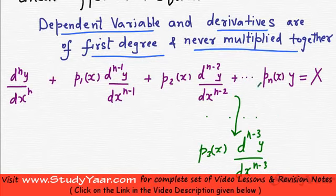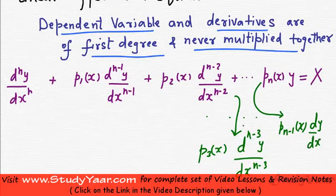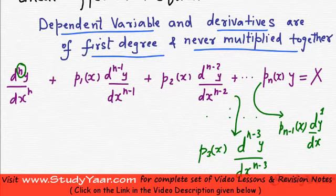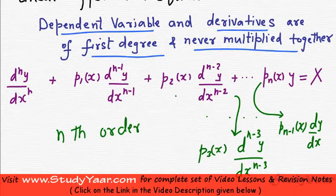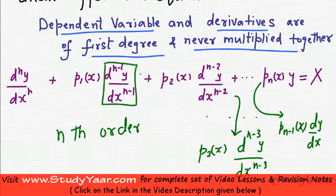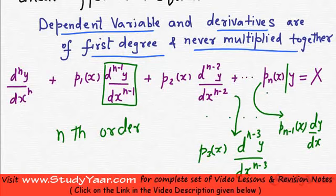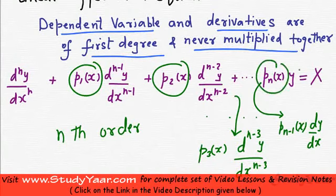In between you have terms like p3, which is a function of x, times d raised to power n minus 3 y upon dx raised to power n minus 3. Your second-last term on the left-hand side is p(n-1)(x) times dy/dx. So your derivatives are decreasing in power from n down to 0. This is an nth-order linear differential equation since all derivatives have degree 1, the dependent variable has degree 1, and they are not multiplied together.